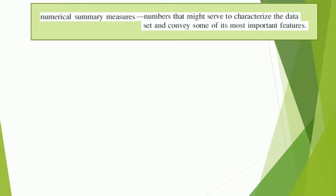Last week we looked at graphical displays as a means of describing a data set. Today we'll be looking at numerical summary measures — numbers that might serve to characterize the data set and convey some of its most important features. What are the most important features we mentioned last week? Location, range or spread, and shape of the distribution. Where is the frequency distribution or histogram located or centered? How wide is its spread? And what's the general shape of the histogram? Now we need numerical measures to describe those aspects.